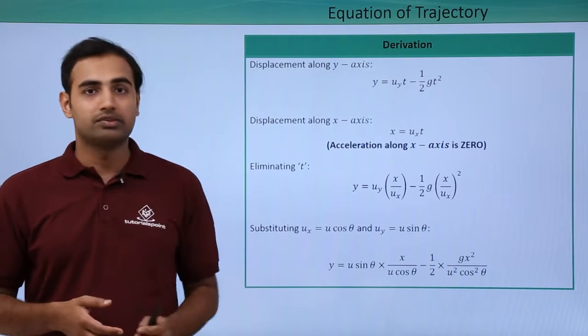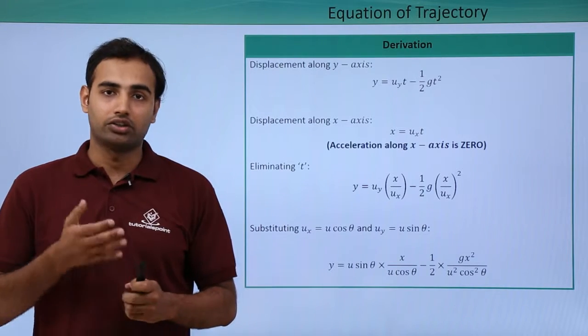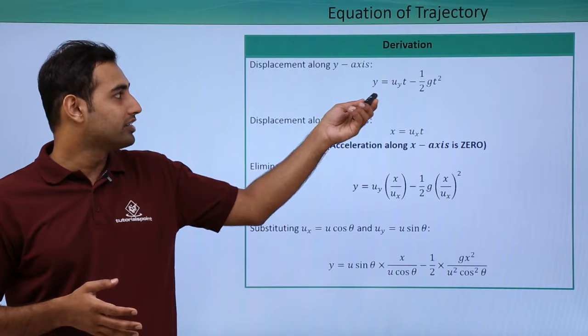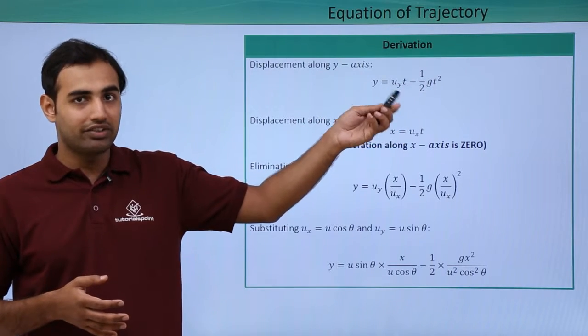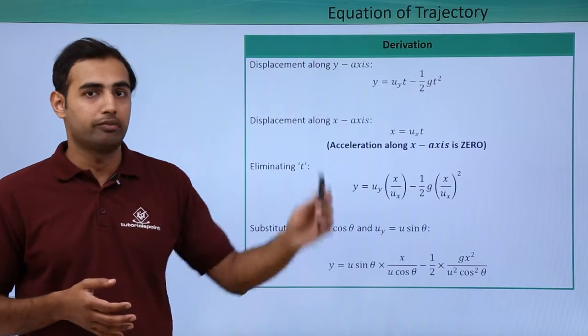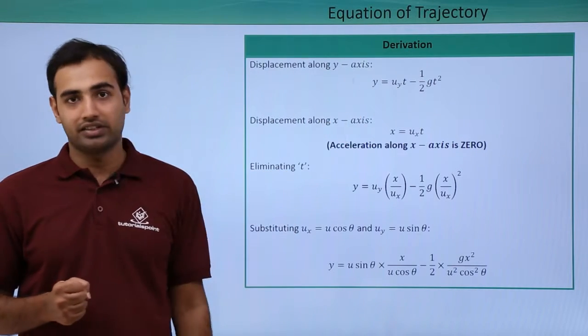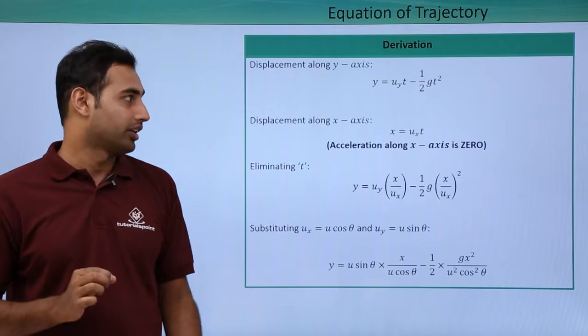So now if I write displacement or positions along the y-axis, it will be y is equal to uyt minus half gt square. So clearly the sign convention that I have taken here is downwards negative and upwards positive. That is why the gravitational acceleration has been put up with a negative sign.